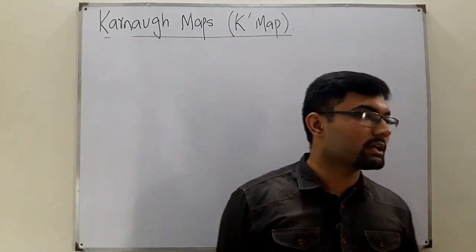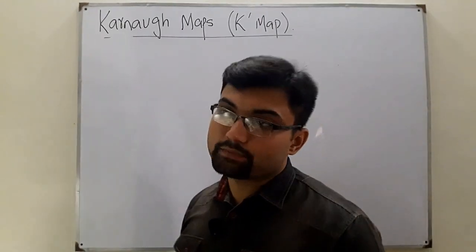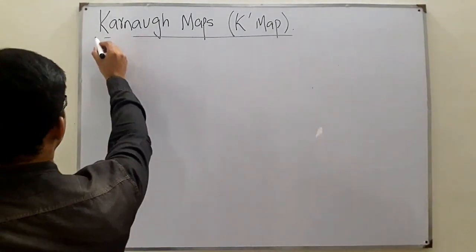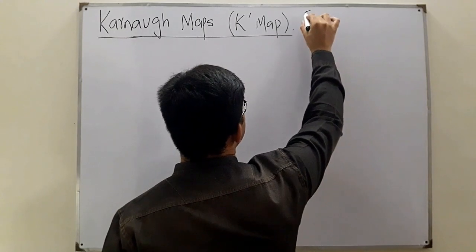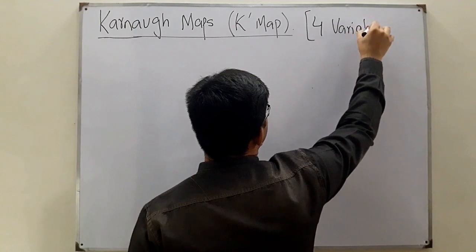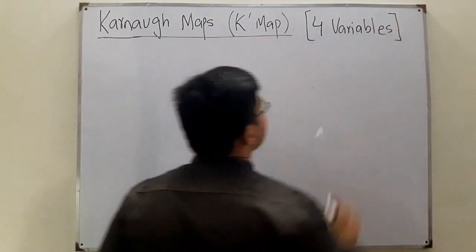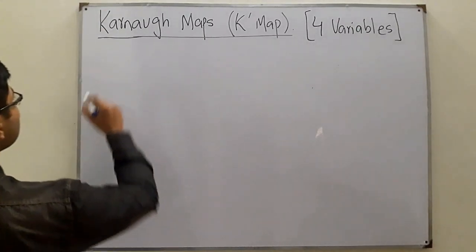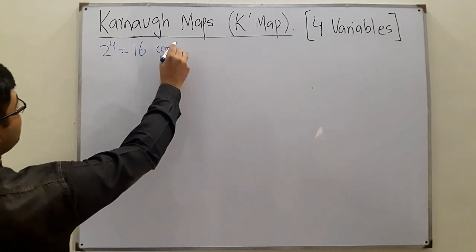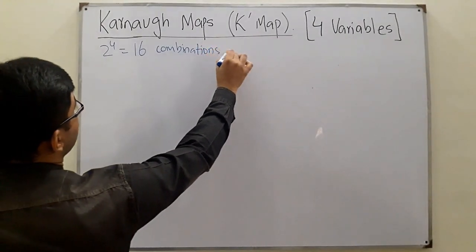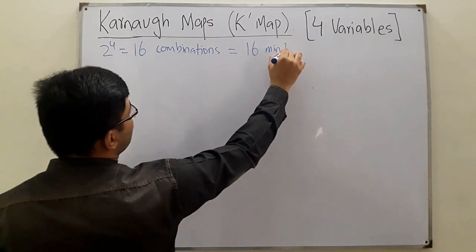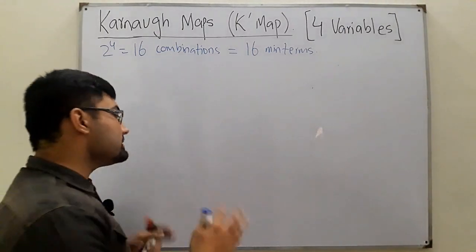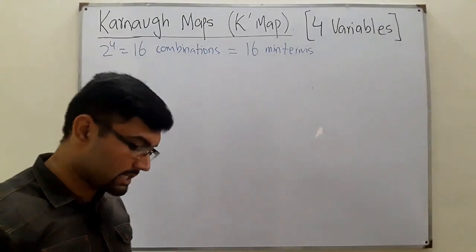Assalamu alaikum. Continuing the topic of K-maps, today we discuss the four-variable K-map. In the case of four variables, we have 2 to the power 4, which is 16 total combinations. This means we have 16 minterms, so we will have 16 blocks in the diagram. We arrange them such that only one variable changes at a time.